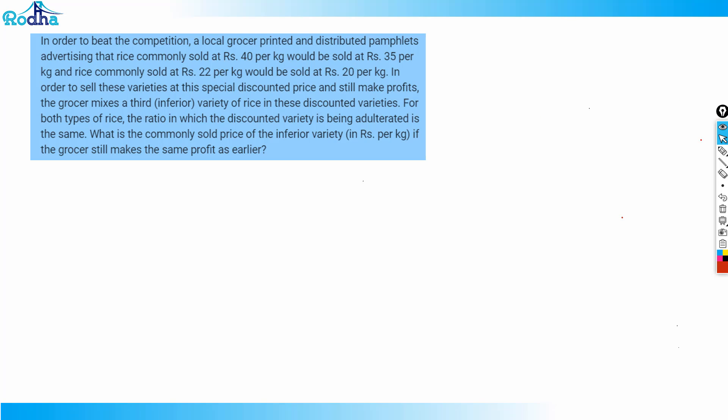Hi guys, let's look at the next question here. This is a very good question on mixtures and allegations. The question says that in order to beat the competition, a local grocer printed and distributed pamphlets advertising that rice commonly sold at Rs. 40 per kg would be sold at Rs. 35 per kg and rice commonly sold at Rs. 22 per kg would be sold at Rs. 20 per kg.